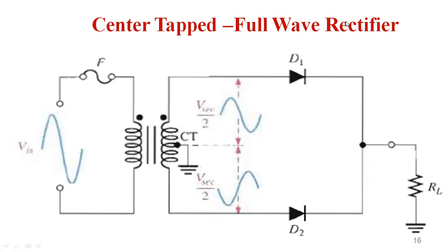Let us see the full wave rectifier — the center-tapped full wave rectifier. As compared to a half wave rectifier which has only one diode, the full wave center-tap configuration has two diodes, D1 and D2, along with a transformer. This transformer steps down the higher voltage to a lower voltage, acting as a step-down transformer. The secondary winding has three terminals, and a connection is made at the center of the secondary coil — we call this the center tap. There is a voltage present at this center tap point.